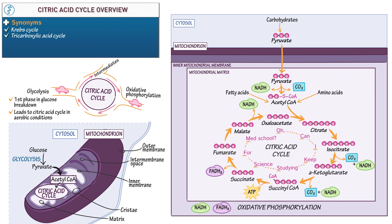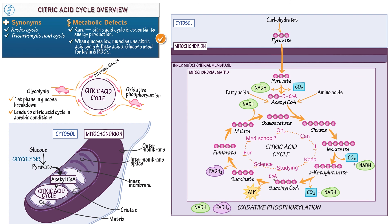As a clinical correlation, metabolic defects in the citric acid cycle are exceedingly rare because the cycle is so essential to our body's production of energy. For example, when glucose in the body is low, muscle cells use the citric acid cycle to break down fatty acids for energy. This saves glucose for essential tissues like the brain and red blood cells that cannot metabolize fats.